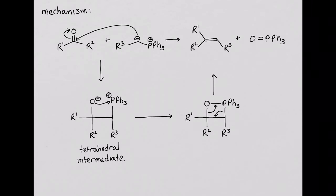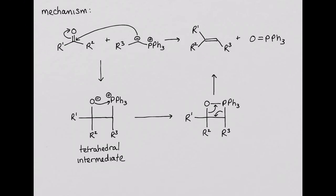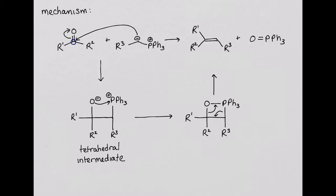Finally, let's track our two carbons that eventually become the two carbons of the alkene throughout the mechanism. The carbonyl carbon is the carbon attached to oxygen throughout the mechanism. In the tetrahedral intermediate it becomes this carbon, and in the cyclic intermediate this carbon. Finally, in the product, it is the leftmost carbon in the alkene.